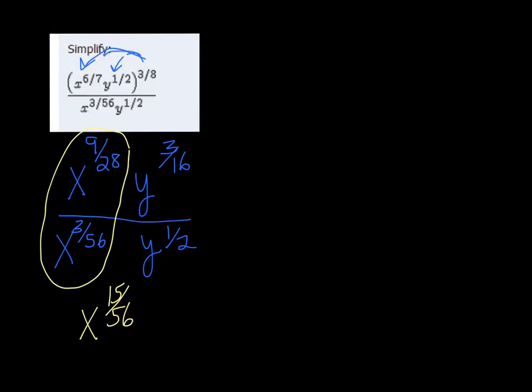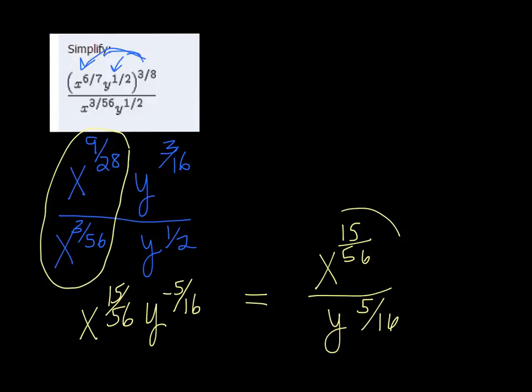This one's a negative, so it's going to be y to the negative 5/16. And we don't want to keep negative exponents, so we're going to change that and put that in the bottom. So we'll bring that one down to the bottom. And there you have it.